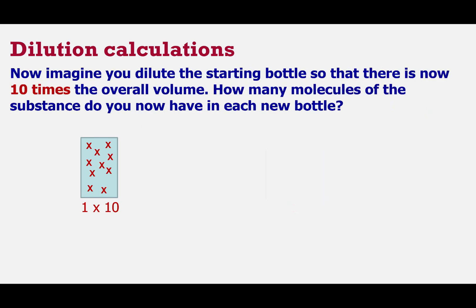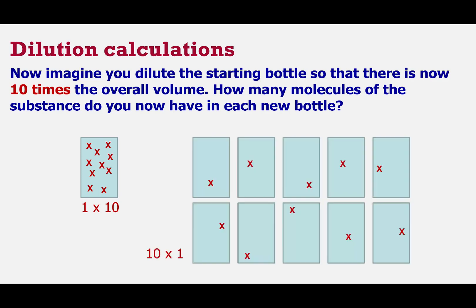And just to continue that line of reasoning, if you imagine now that you had your one volume with 10 molecules in it, and you now added nine more, so that overall we had 10 times the overall volume, how many molecules would we have? How many molecules would be present in each of those different bottles? And the answer is that there would be one per unit. So we've gone from having one lot of 10 to having 10 lots of one. Now that may seem really ridiculously straightforward, but I think what you'll find helpful to think about that when we come to look at some dilution calculations in a moment.